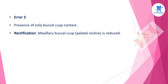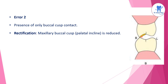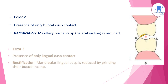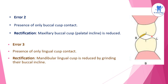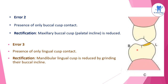The next frontal plane error is the presence of only buccal cusp contact, which is rectified by reducing the maxillary buccal cusp or palatal incline. Another error is the presence of only lingual cusp contact, which is rectified by reducing the mandibular lingual cusp by grinding the buccal incline of that cusp.